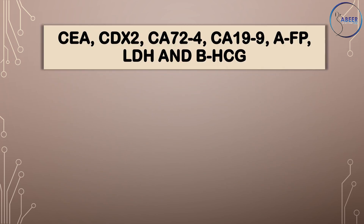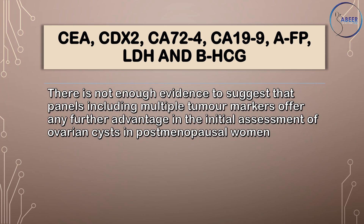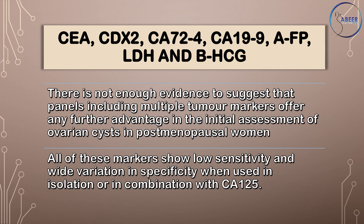Carcinoembryonic antigen (CEA), CDX2, cancer antigen 72-4 (CA-72-4), cancer antigen 19-9 (CA-19-9), alpha-fetoprotein, lactate dehydrogenase (LDH), and beta-human chorionic gonadotropin (beta-HCG): There is not enough evidence to suggest that panels including multiple tumor markers offer any further advantage in the initial assessment of ovarian cysts in postmenopausal women. All of these markers show low sensitivity and wide variation in specificity when used in isolation or in combination with CA-125.